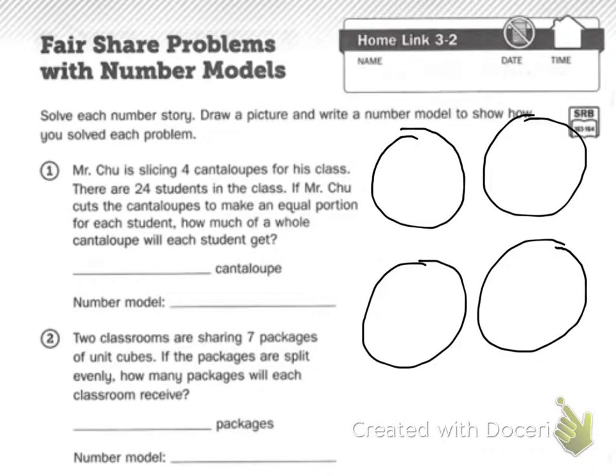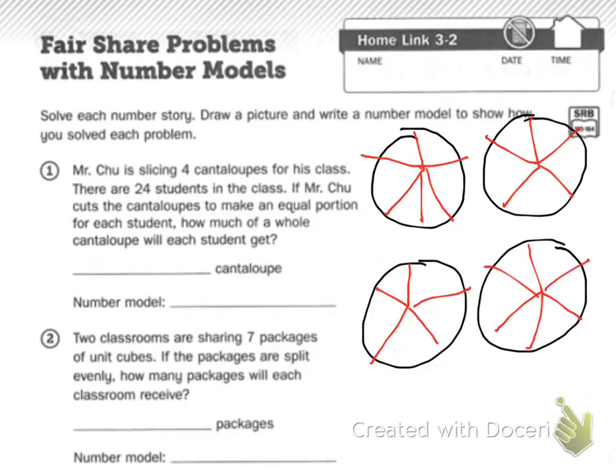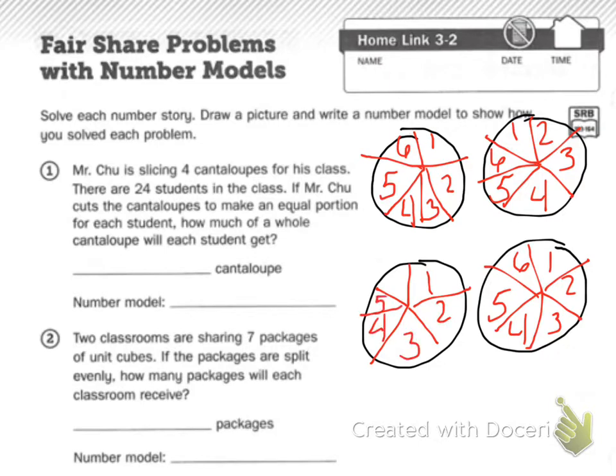So I know how many slices I eventually have to get to: 24, because there's 24 students. I only have four cantaloupes. So I know my factors of four, of 24. If I count by fours: four, eight, 12, 16, 20, 24. I know I need to split each cantaloupe into six to get enough slices. So I'm going to first split each one into thirds, and then split the thirds into halves, because then I have six. So I label one through six on each cantaloupe. So I have six, twelve, eighteen, twenty-four total slices.